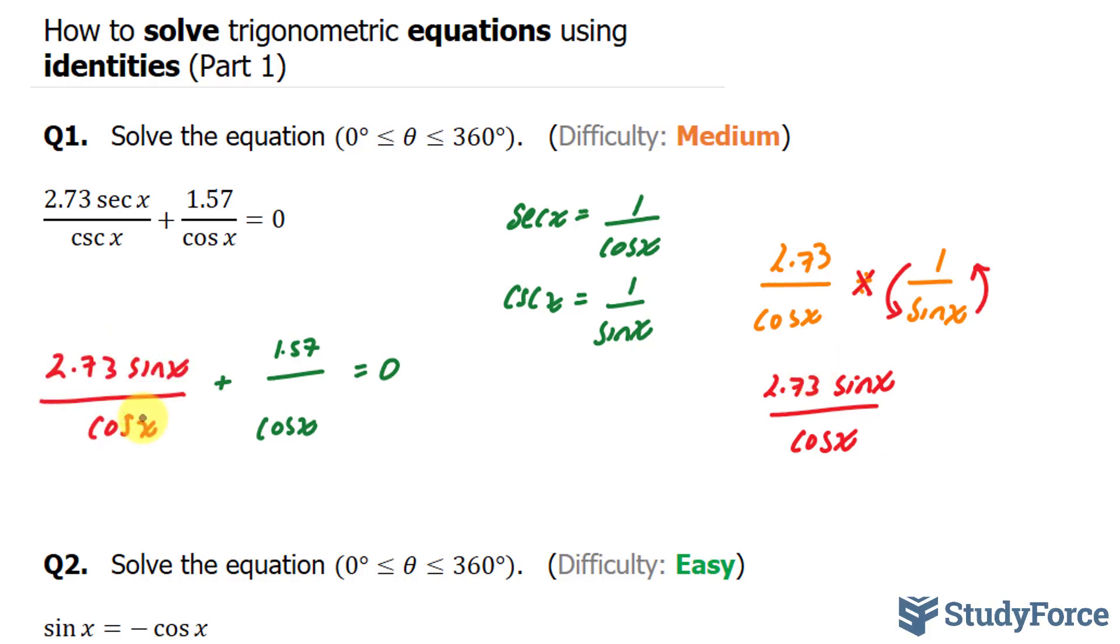Now that you've done this, you'll notice that both of these terms share the same denominator, cosine x. So we can put the two numerators underneath one denominator. Cosine x over 2.73 sine x plus 1.57. Unfortunately, these two terms are not like terms, so we can't add them together. And the right side is still equal to zero.